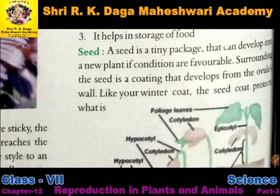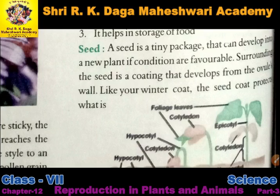Aapko pata hai ki jo seed hai usisi se hamara plant ugta hai. Jab hum ek seed ko soil mein bury kar dete hain aur isko saari conditions favorable milti hain, to woh seed grow karke ek plant banata hai. Surrounding the seed is a coating that developed from the ovule, called the seed wall.